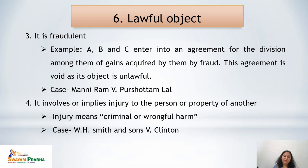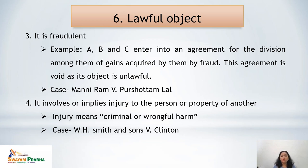The second category is fraudulent objects. The Indian Contract Act 1872 says that any object which is fraudulent cannot give rise to an enforceable contract. For example, if A, B, and C enter into an agreement for the division among them of gains acquired by fraud, this agreement is void because its object is unlawful. This same point can be identified from the case of Money Ram versus Purshottam Lal.